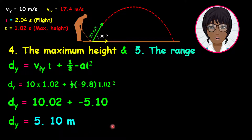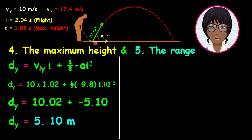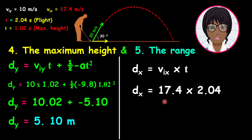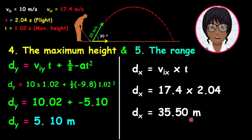Now let us calculate the range of the golf ball. The range is the distance from the starting position to the final position of the ball along the x component. The range can be calculated as dx equals the velocity in the x component multiplied by the time of flight. Therefore, the range equals 17.4 multiplied by 2.04, hence the range equals 35.50 meters.